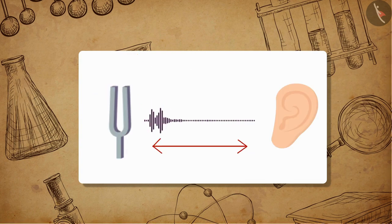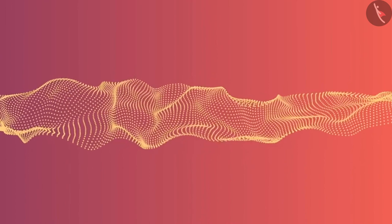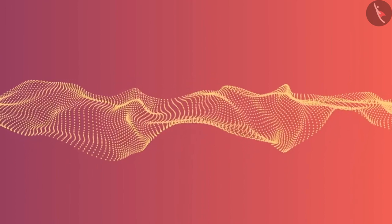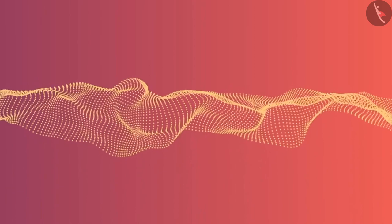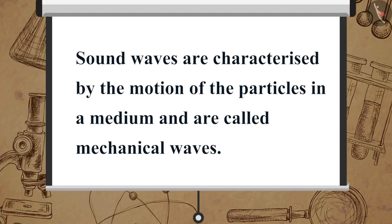The disturbance created by any source of sound propagates through the medium, but the particles of the medium do not travel. This is what happens during the propagation of sound and so it can be visualized as a wave. Sound waves are characterized by the motion of the particles in a medium and are called mechanical waves.